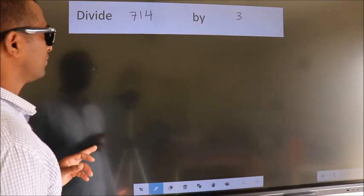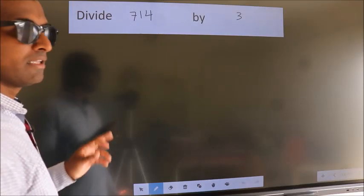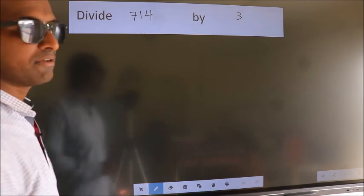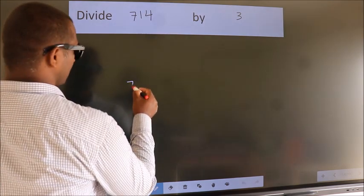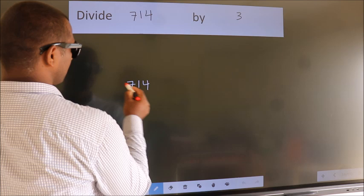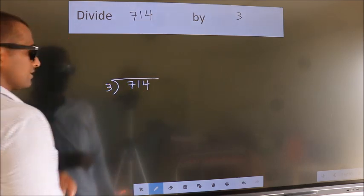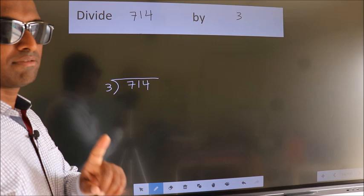Divide 714 by 3. To do this division, we should frame it in this way: 714 here, 3 here. This is your step 1.